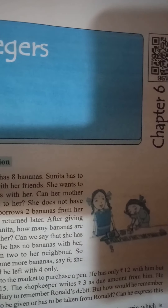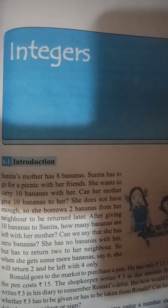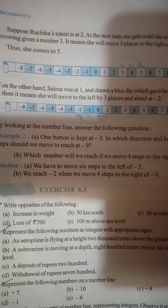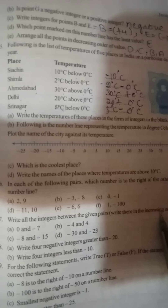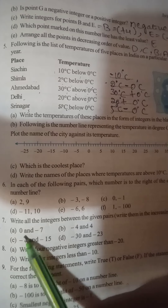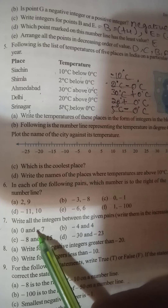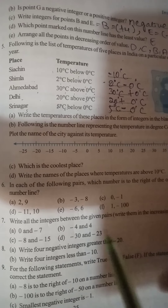Hi students, chapter 6 integers, exercise 6.1, question 7: write all the integers between the given pairs and write them in increasing order. The first question is 0 and minus 7 — minus is the negative symbol — write in increasing order.